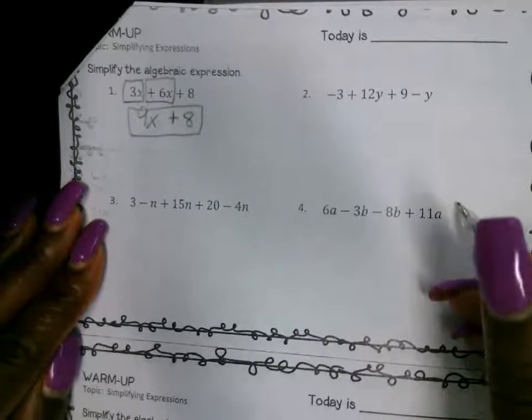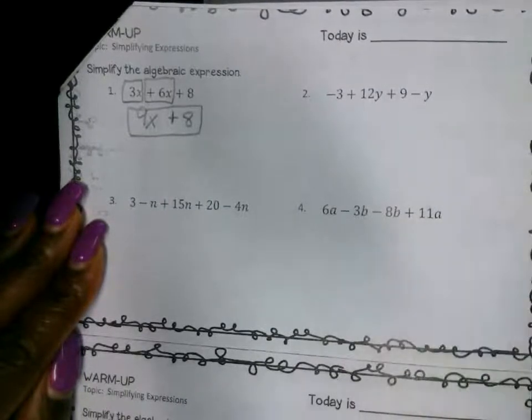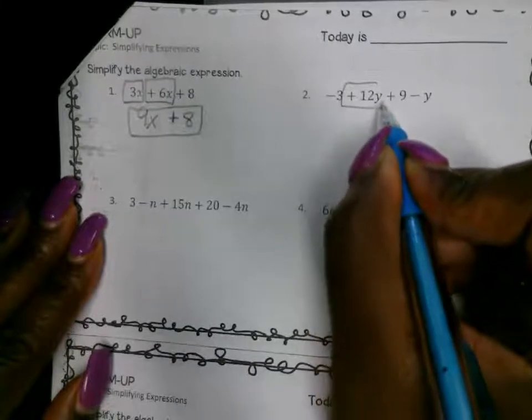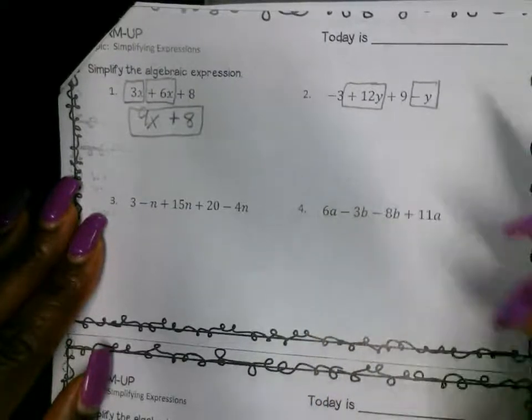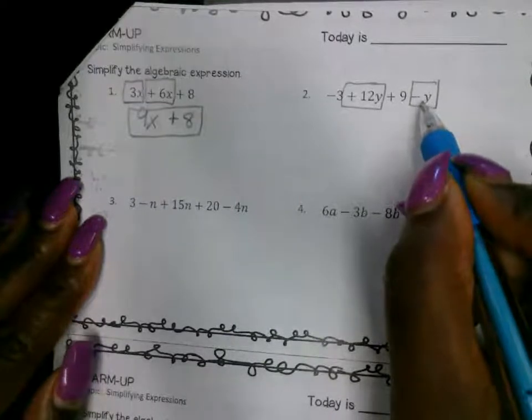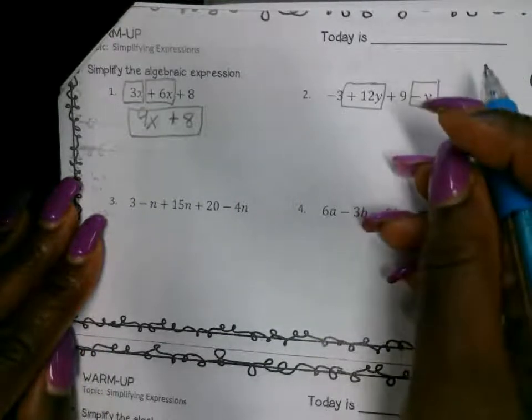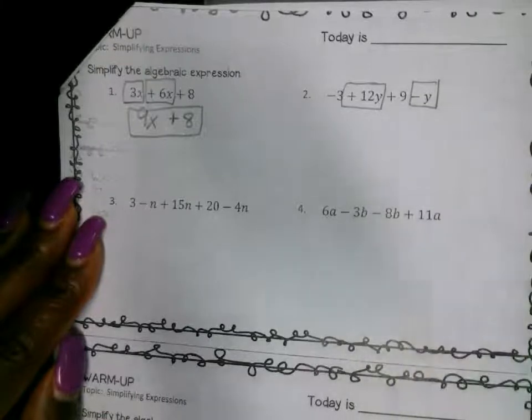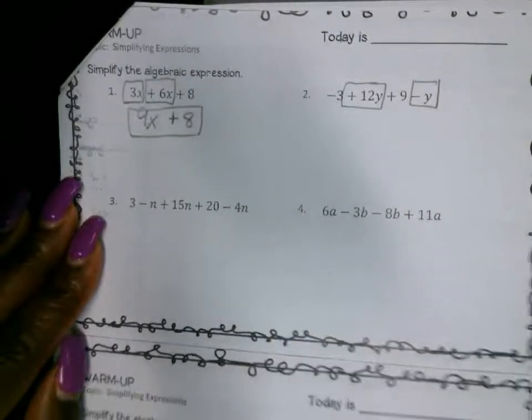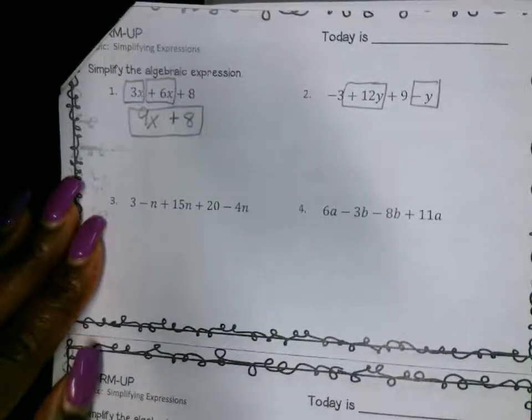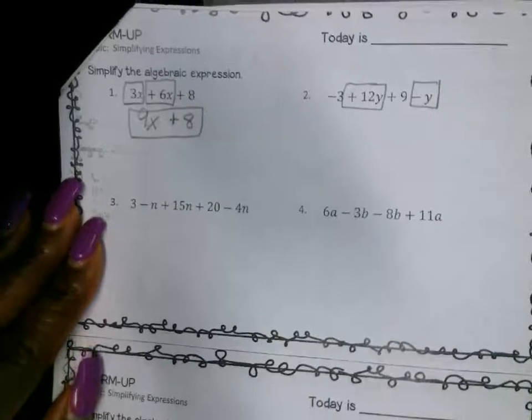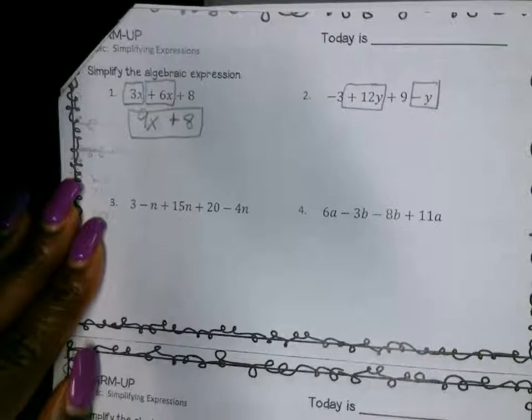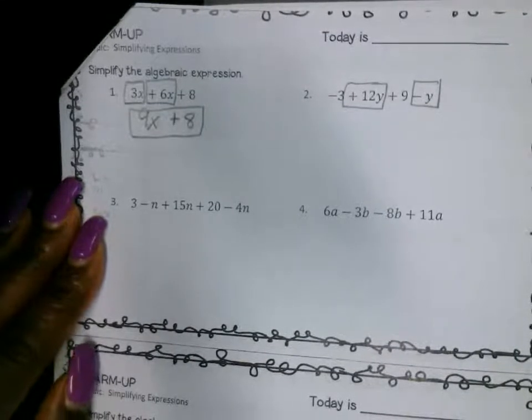Let's look at number 2. What terms are alike? What two sets of terms are alike in this problem? 12y and negative 1y. Very good. There's automatically a coefficient. And what's the definition for coefficient? Coefficient is the number that is attached to the variable. What's the variable? What's a variable? It's a letter. It's an unknown or letter that represents a number that we don't know, right?